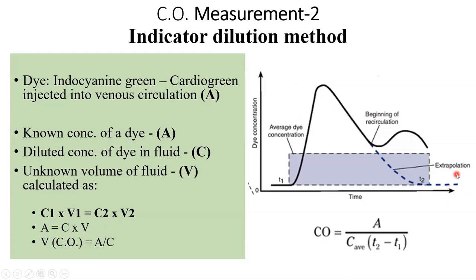This is standard extrapolation used commonly in mathematics. By this, we get the area under the curve, which represents the average value of the dye. The challenge is when you inject a dye inside a chamber with moving blood.